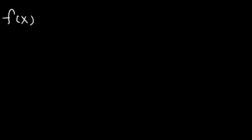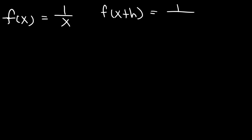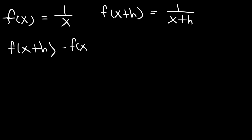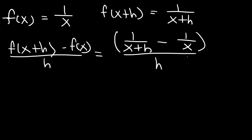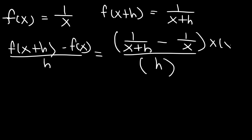The next example is 1 over x. So f of x plus h is going to be 1 over x plus h. To calculate the difference quotient: f of x plus h is 1 over x plus h, minus f of x which is 1 over x. Since we have a complex fraction, the best thing to do is multiply the top and bottom by the common denominator of the two fractions, which will be x times x plus h.